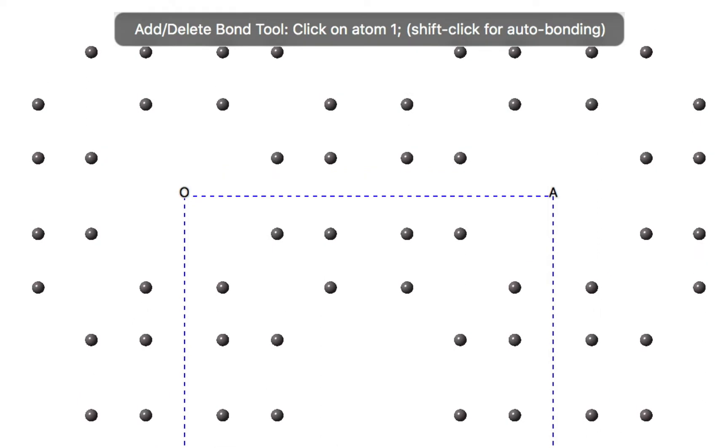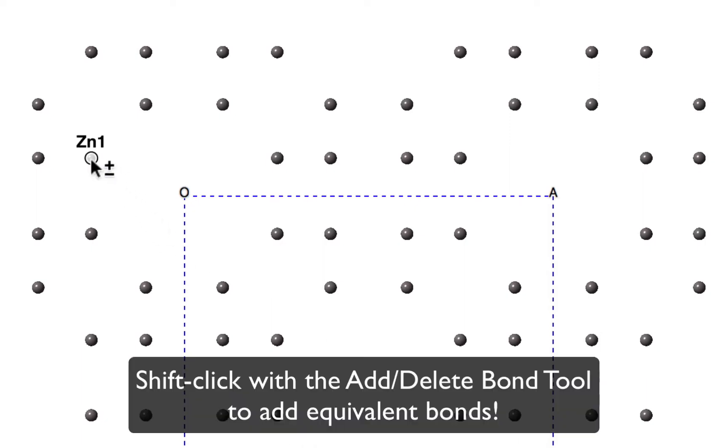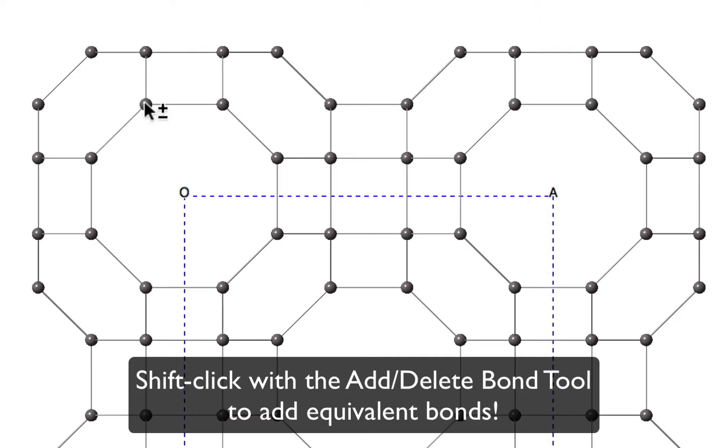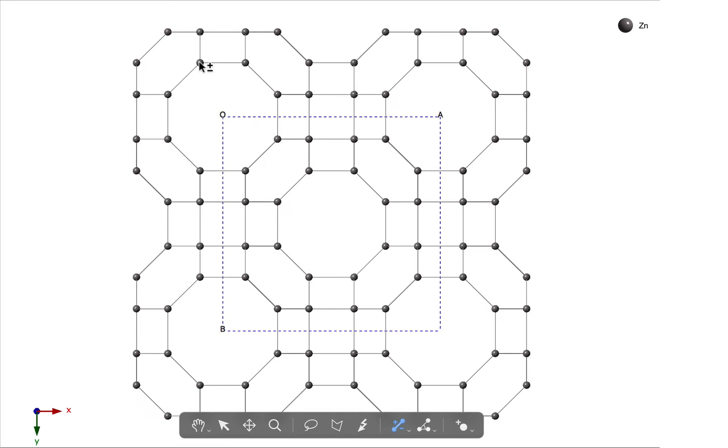We want the add-delete bond tool, and I'm going to click on a pair of zinc atoms. Now I'm going to hold the shift key down as I click, and what that does is it will generate equivalent bonds throughout the structure. So now we have a framework topology.